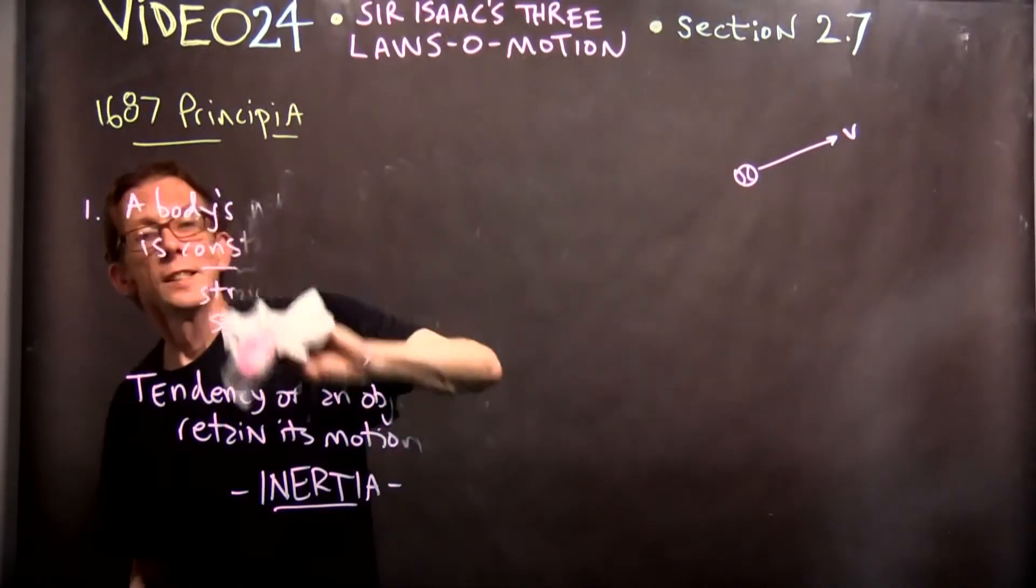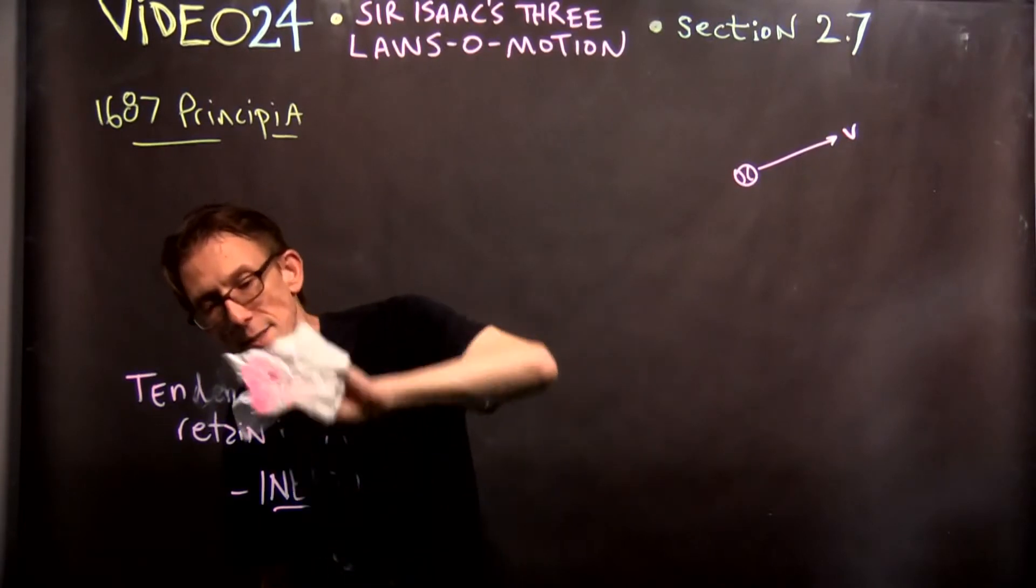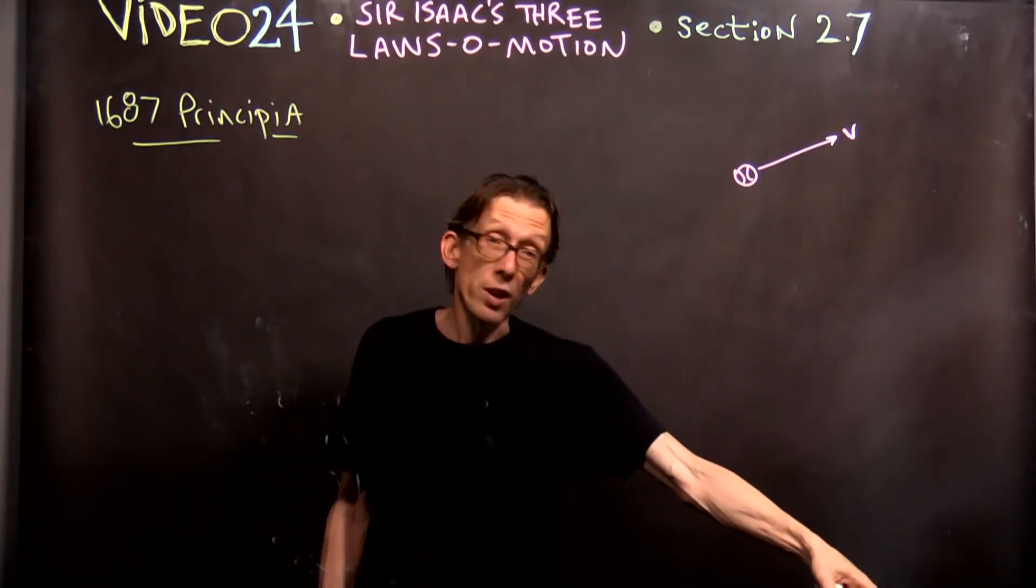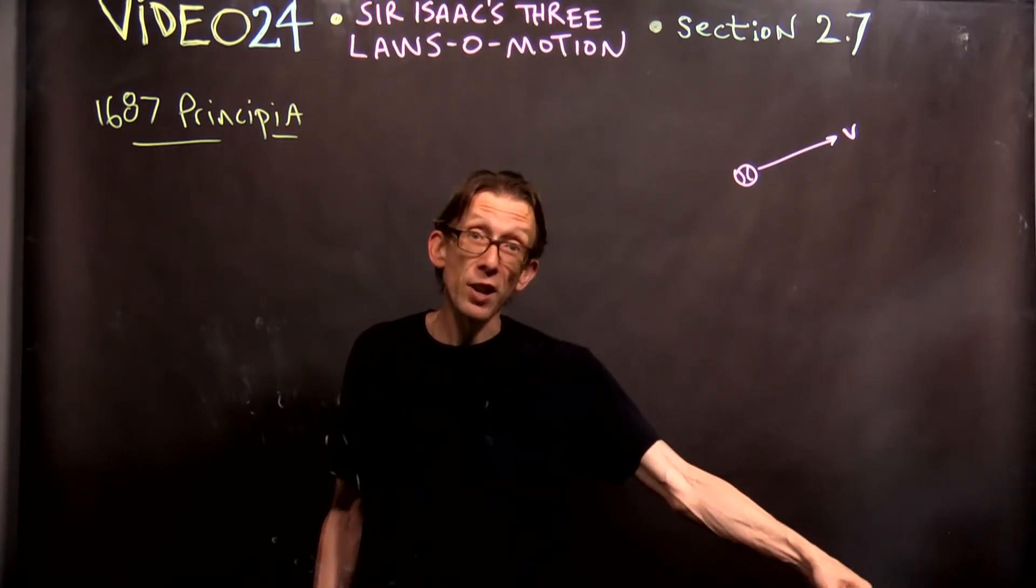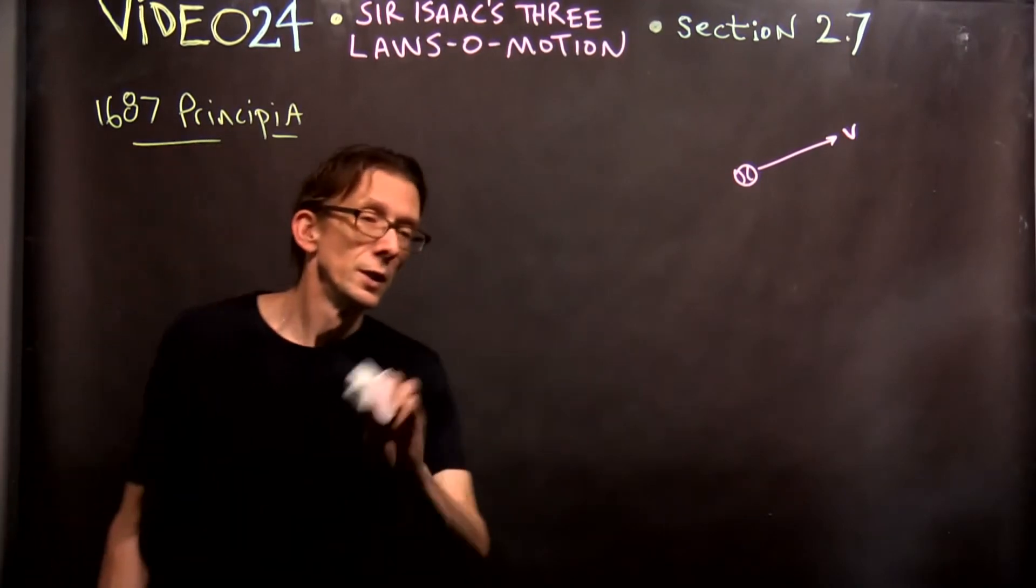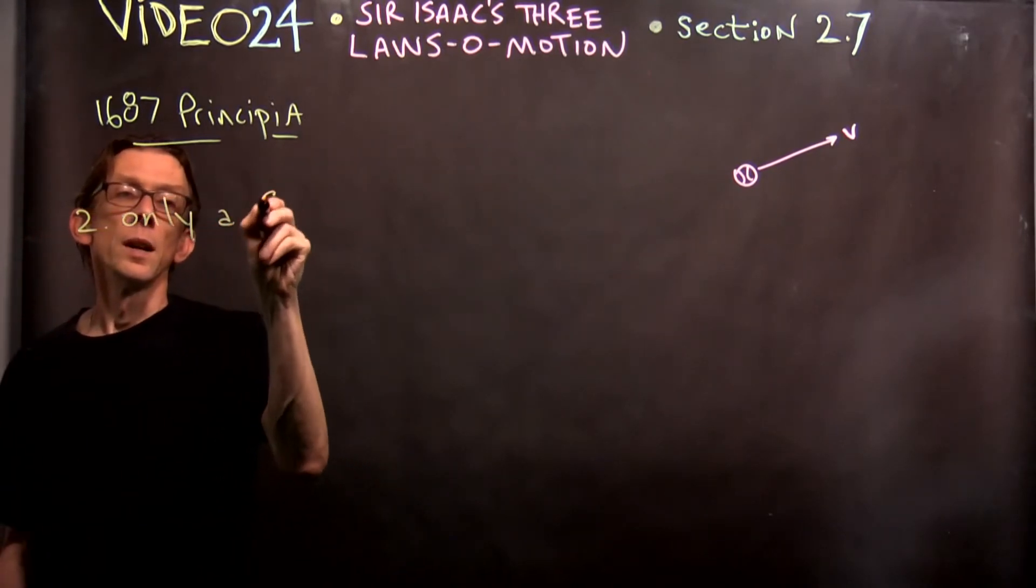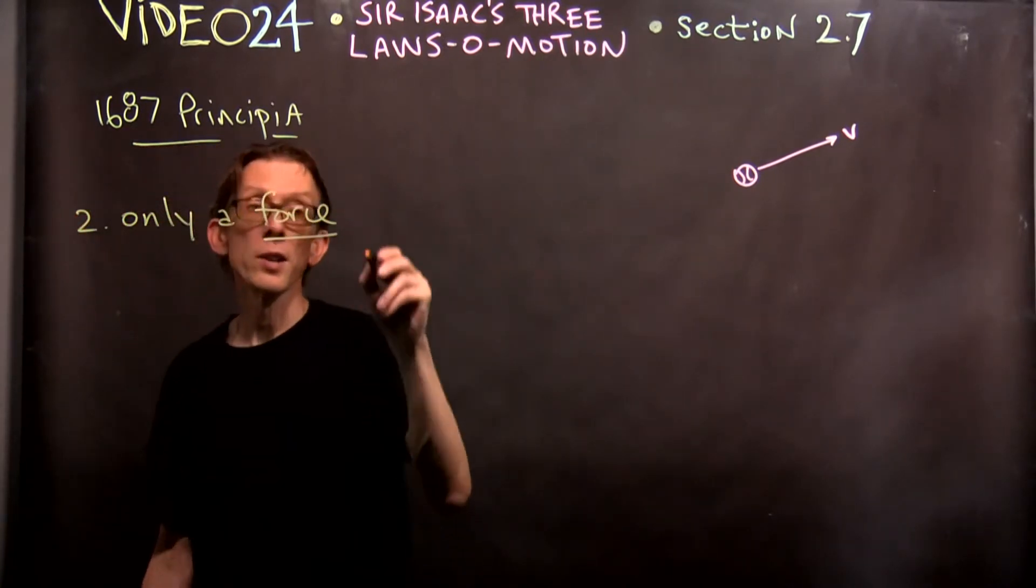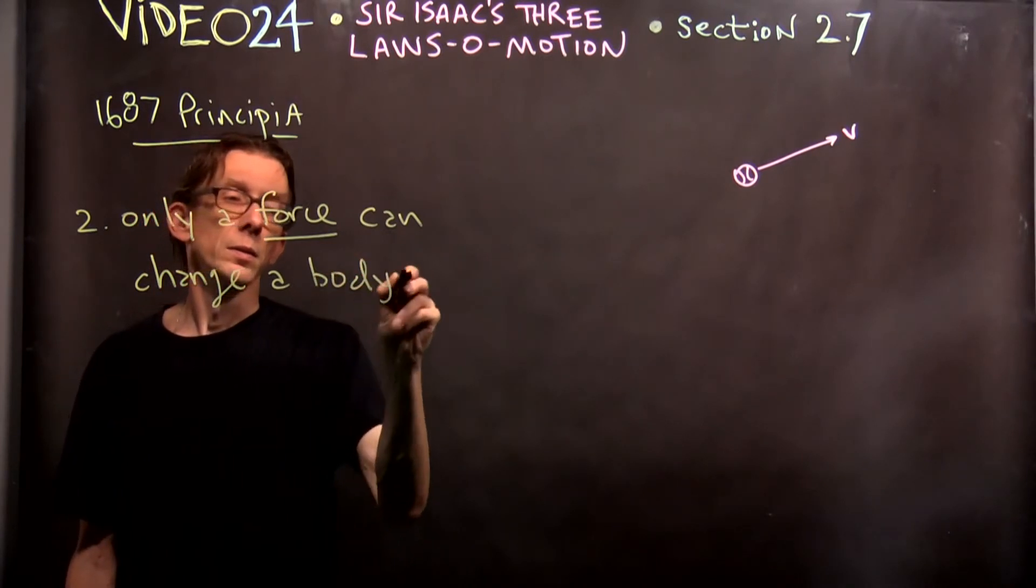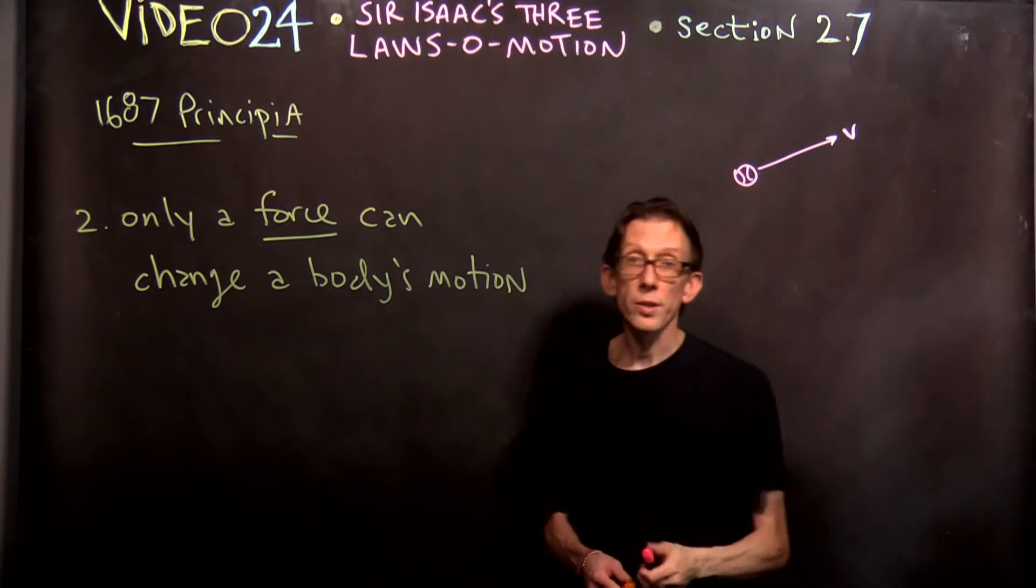The second law tells us what is required to change the motion. whether the motion is zero velocity or something else. Remember when I say motion, that includes no motion. That includes, so right now, my eraser has no velocity. Its motion is no motion. Okay? Its velocity is zero. In order to change that, I've got to apply, I've got to have something that's got to happen to start my eraser moving, right? That's what the second law deals with. The second law says that a force is required. Number two, only a force can change a body's motion. That's the second law.